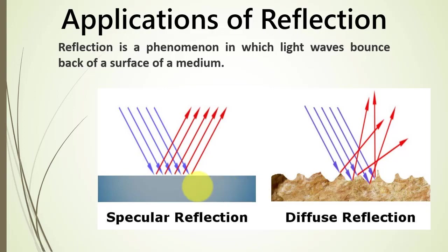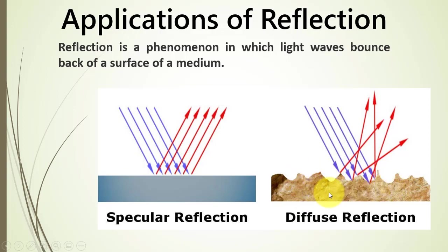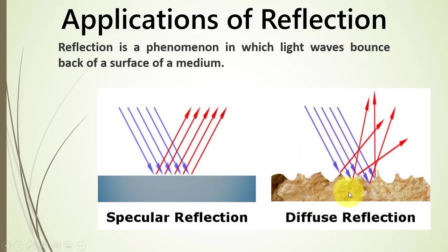We can have a smooth surface and a rough surface. For a smooth surface those laws are valid, with the angle of incidence equal to the angle of reflection — this is called specular reflection. For a rough surface those laws are not valid and we call it diffuse reflectance. We will not study the mathematics of diffuse reflectance, but we will see some daily life phenomena related to it.